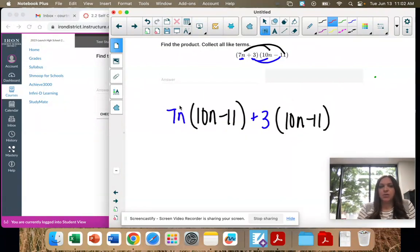There's the setup. Let's multiply. 7 times 10 is 70, n times n is n squared.